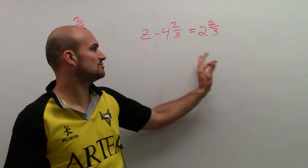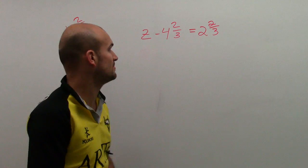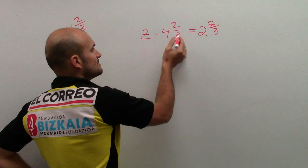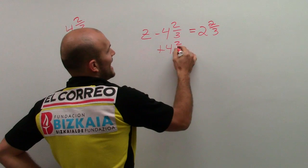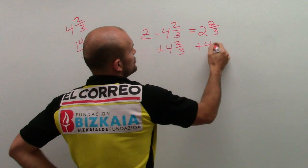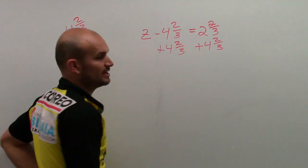This problem, though, it will be fine just to leave it as a mixed number. So now, since I'm subtracting 4 and 2 thirds, I'm going to add 4 and 2 thirds to both sides using the addition property of equality.